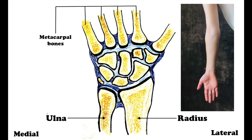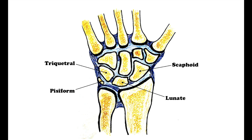It is important to remind ourselves that in the anatomical position, the palm of the hand is facing forwards or anteriorly, with the thumb pointing outwards or laterally. As we already mentioned, carpal bones are organized into two rows, proximal and distal. We will start from the lateral side to medial side.